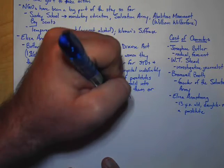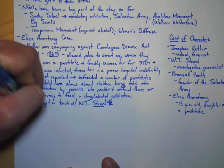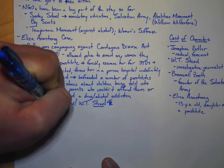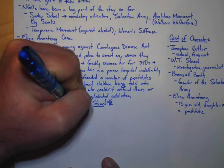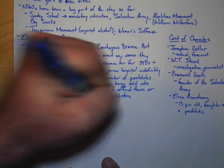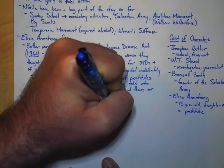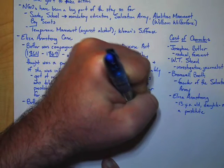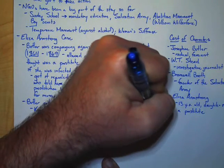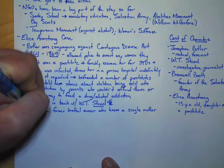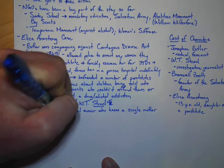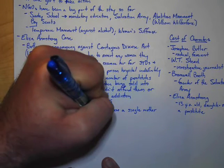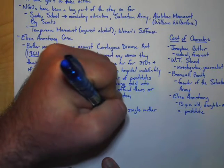Stead knew a former brothel owner who knew a single mother who was a prostitute and a drug addict.